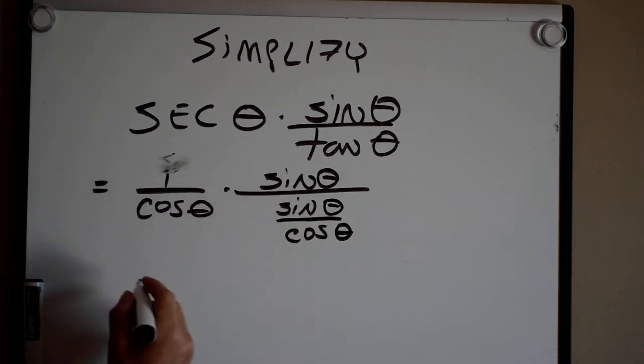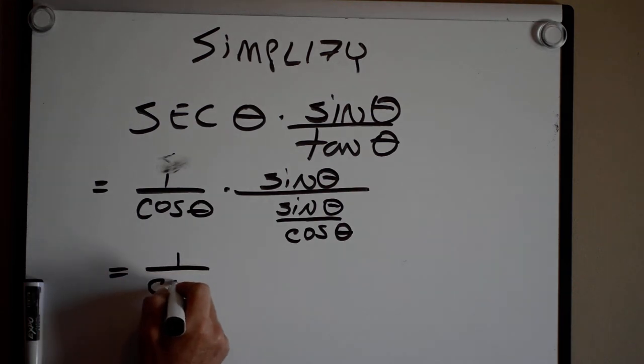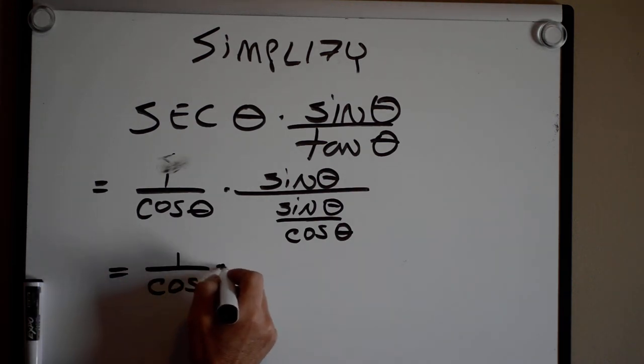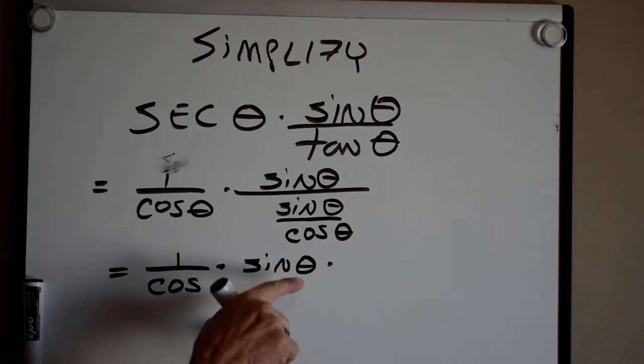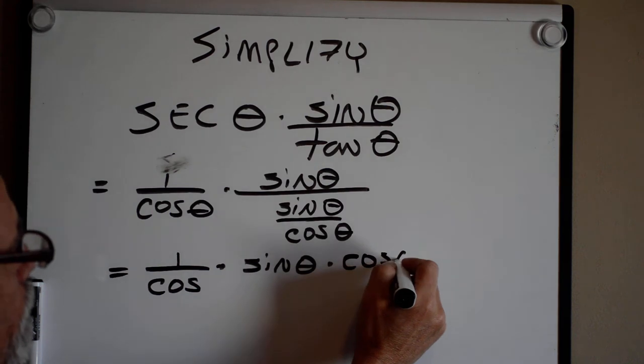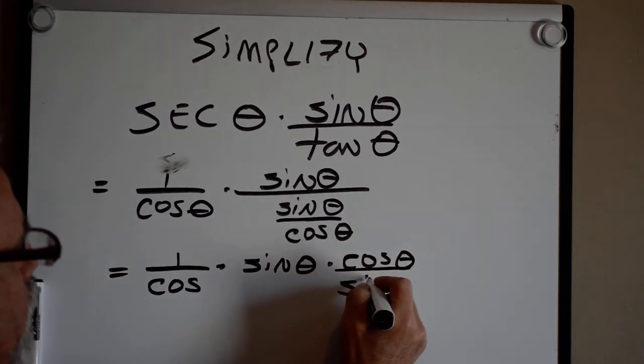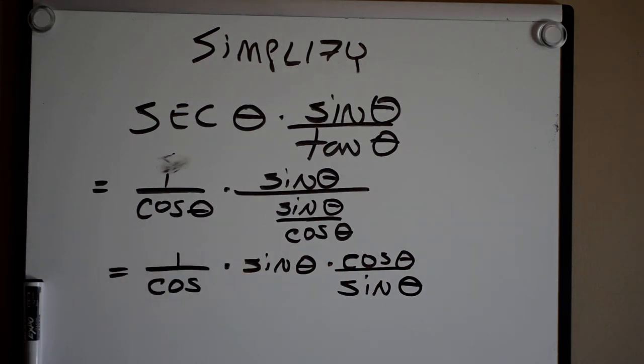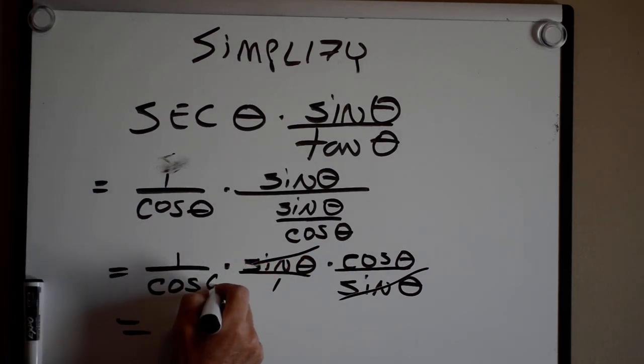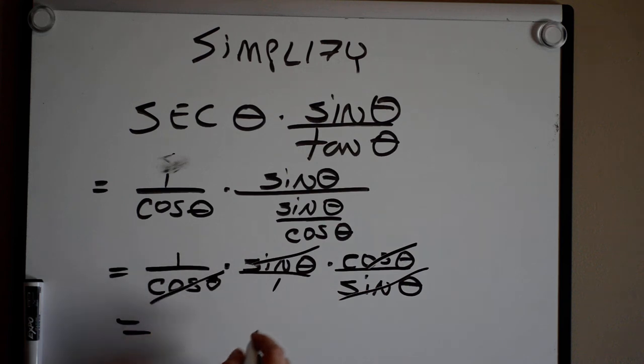So, I'm going to multiply by the reciprocal. This becomes 1 over the cosine of theta times the sine of theta times the reciprocal is cosine theta over the sine of theta. I'm multiplying all the way across. So this sine theta cancels with that sine theta. Cosine theta cancels with cosine theta. And that guy is just equal to 1.